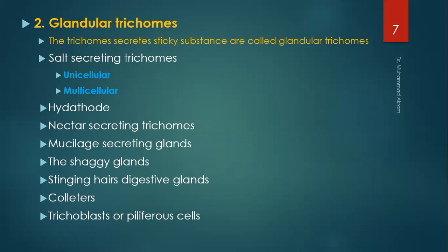The second type is the glandular trichomes. The glandular trichomes secrete sticky substances, which is why they are known as glandular trichomes — glandular meaning specific gland-like structures that secrete watery or sticky substances. Types of glandular trichomes include: salt-secreting trichomes (unicellular or multicellular), nectar-secreting trichomes, shaggy glands, stinging hairs, digestive glands, colletors, and trichoblasts or piliferous cells.